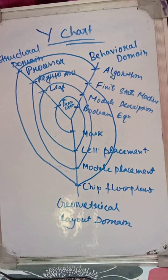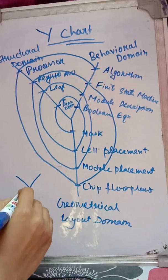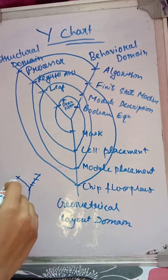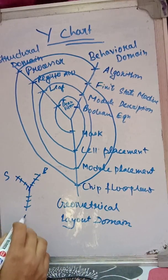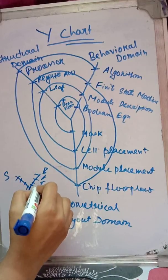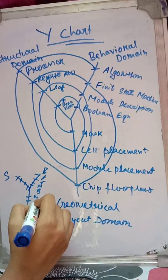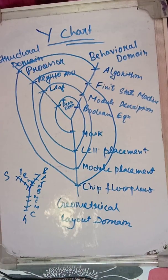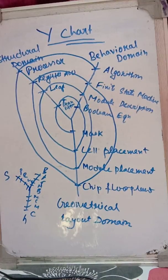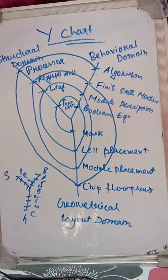So the three domains are behavioral, structural, and geometrical. Remember A, F, M, B — M, C, M, C — P, R, L, T, and you're done with the Y-chart. Thank you very much for watching. If you found it helpful, please like and share.